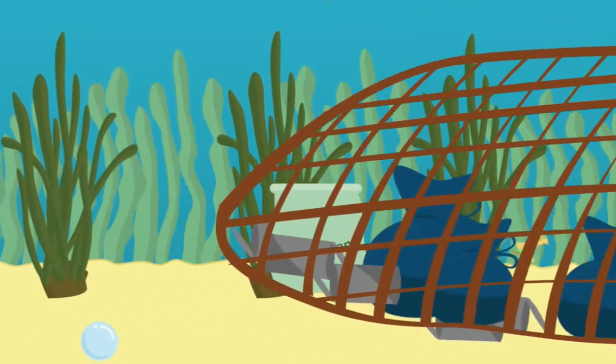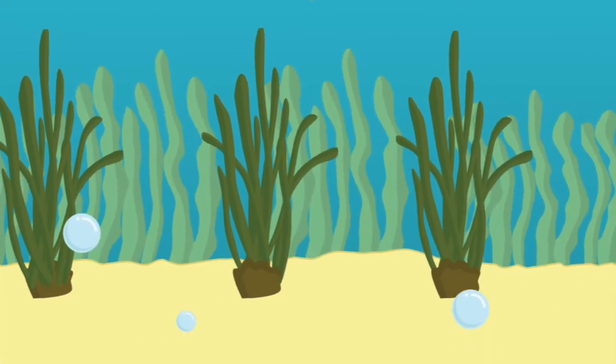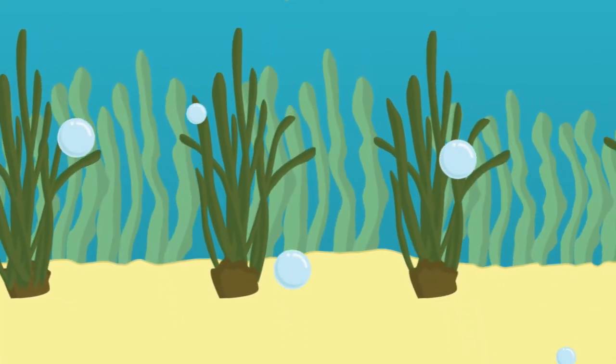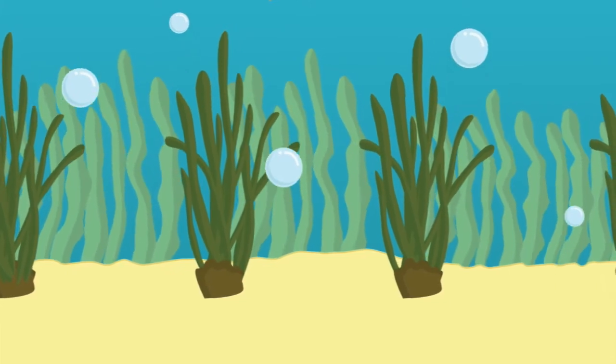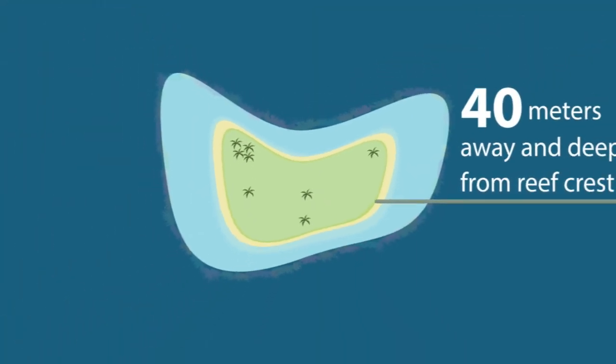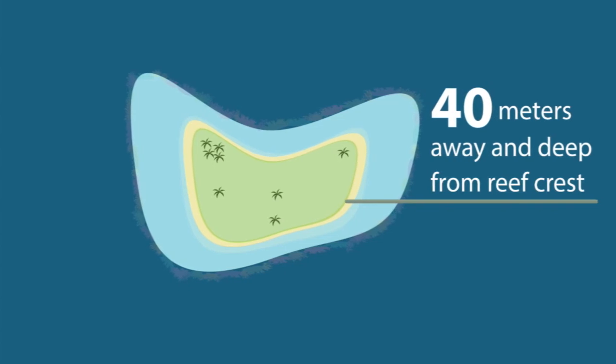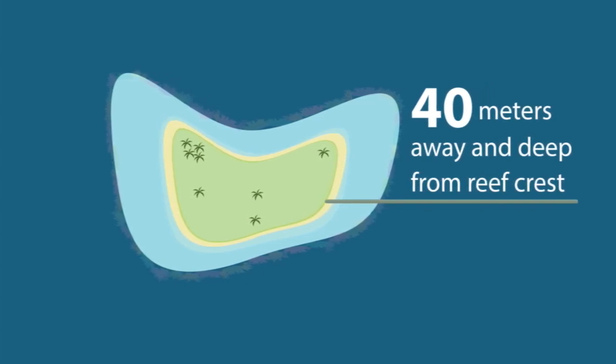Plastics will smother the seagrasses, and excessive nutrients will favor the growth of algae in the water that blocks sunlight from reaching the seagrass. Make sure that the island sewage outflow is at least 40 meters away and deep from the reef crest.